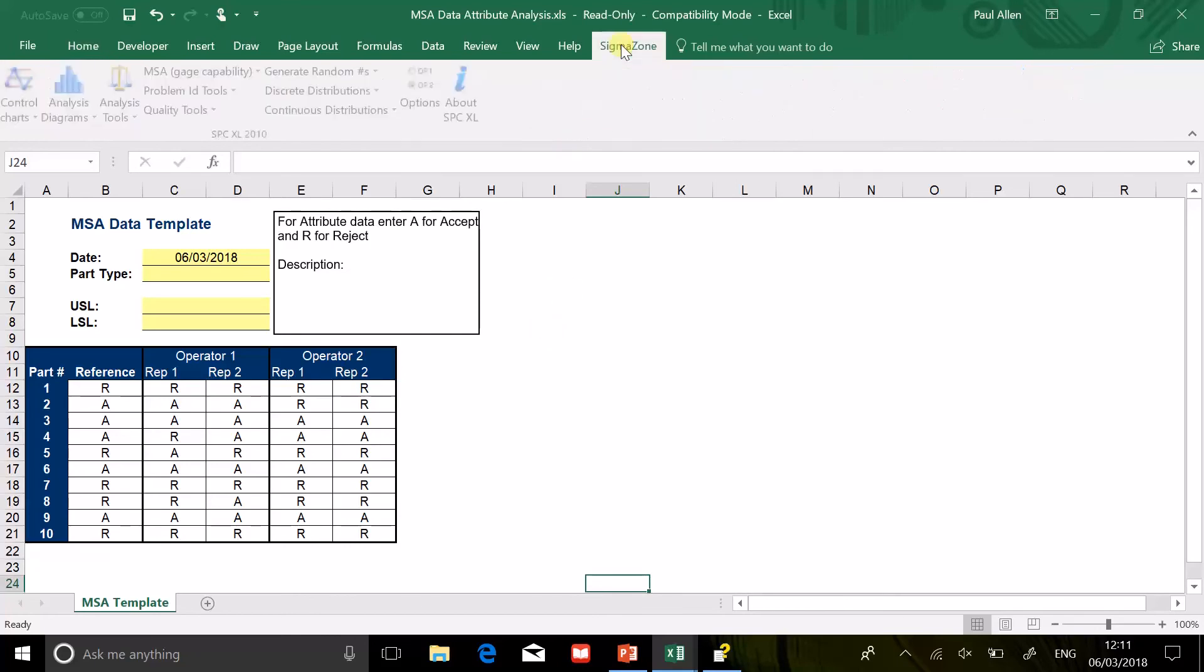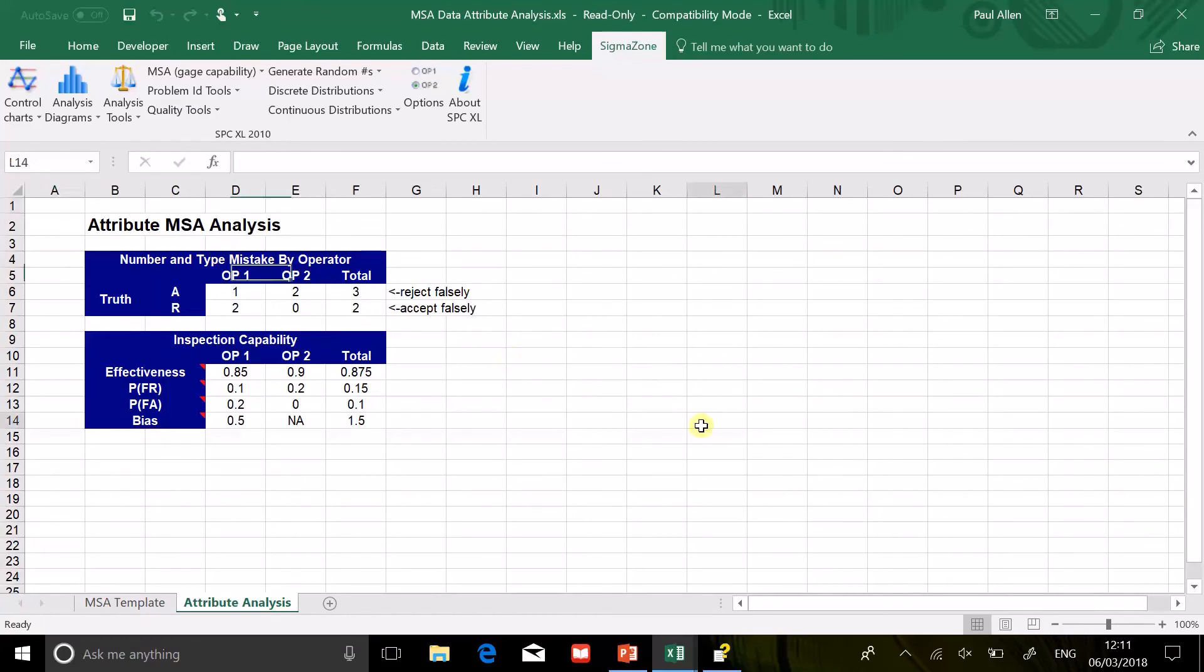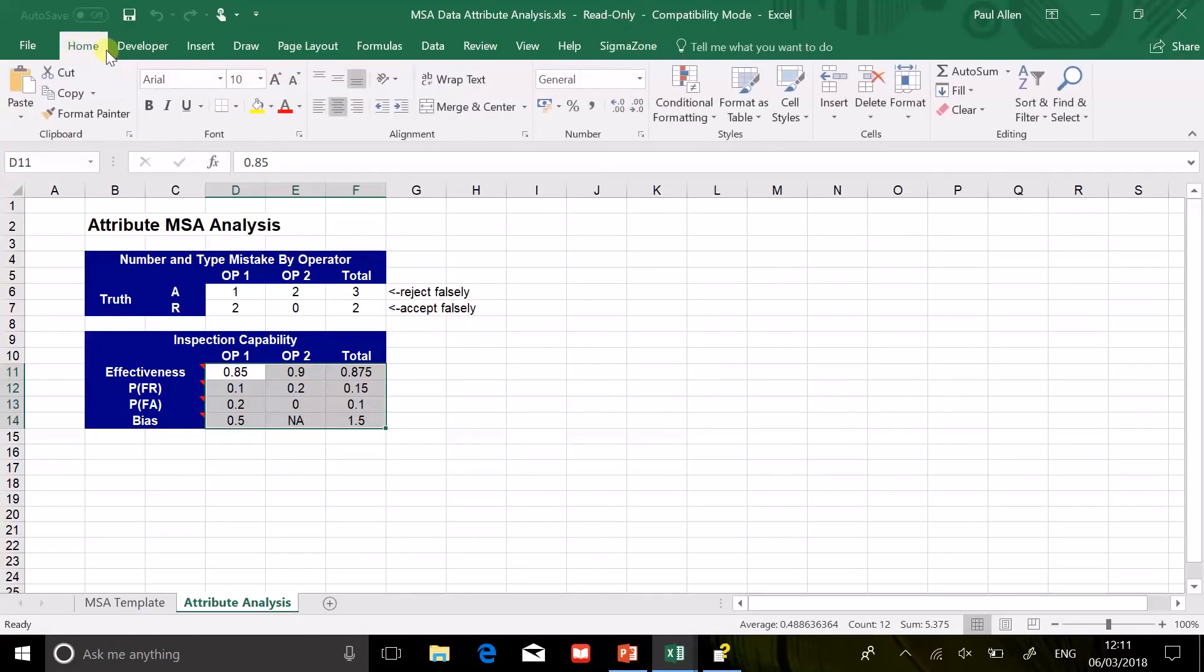And then if we go Sigma Zone, MSA, Gauge Capability, Attribute Analysis, it'll work out those statistics. So here we are, in this zone here. Let's just color this in. In the yellow fields. There's the statistics. We've got the four statistics for operator 1, the four statistics for operator 2, and the overall results.